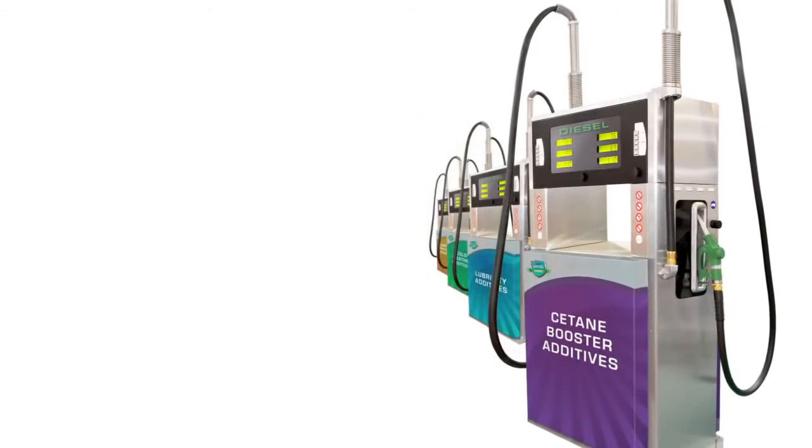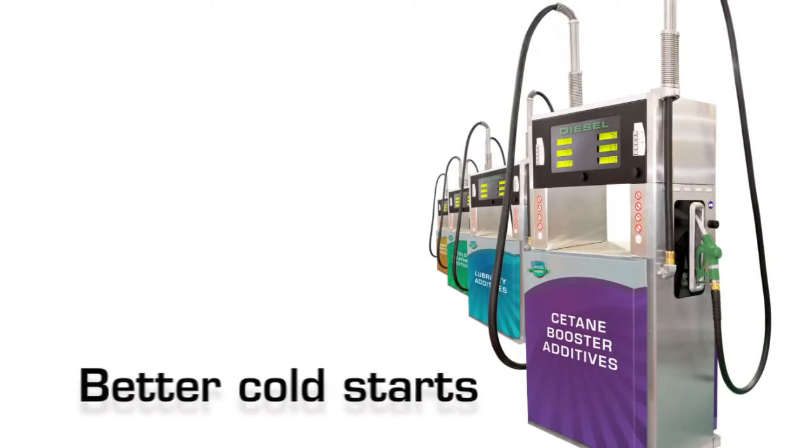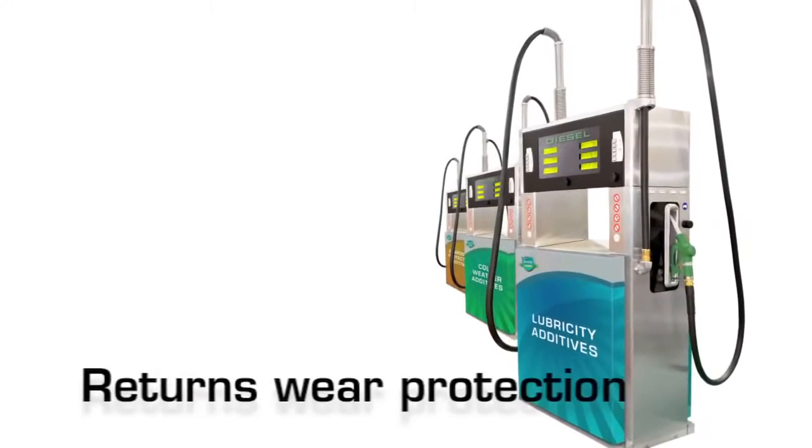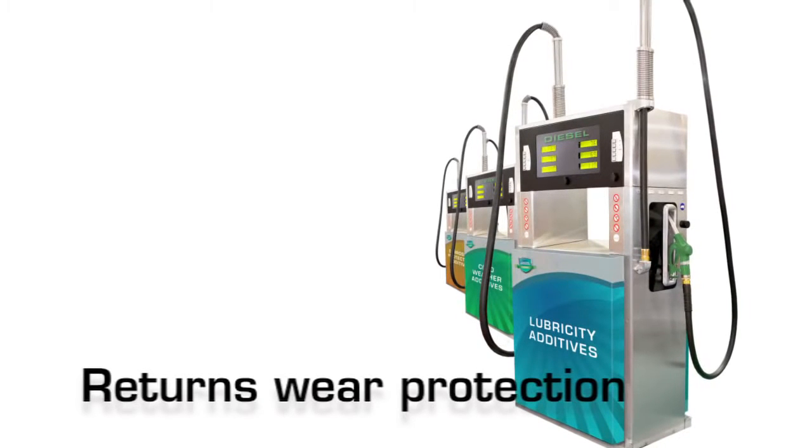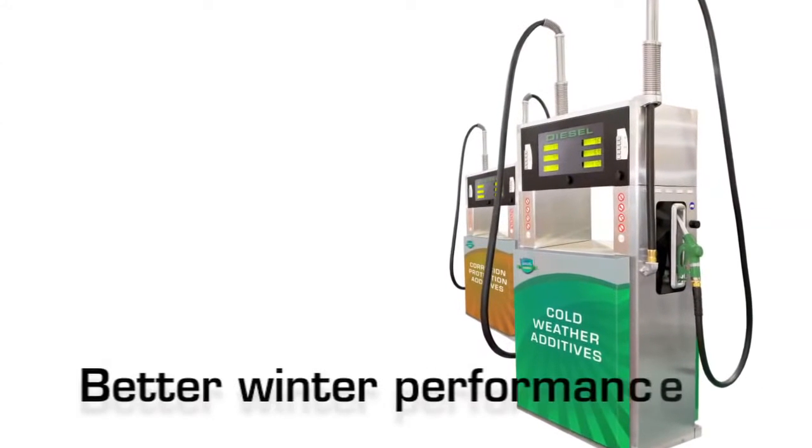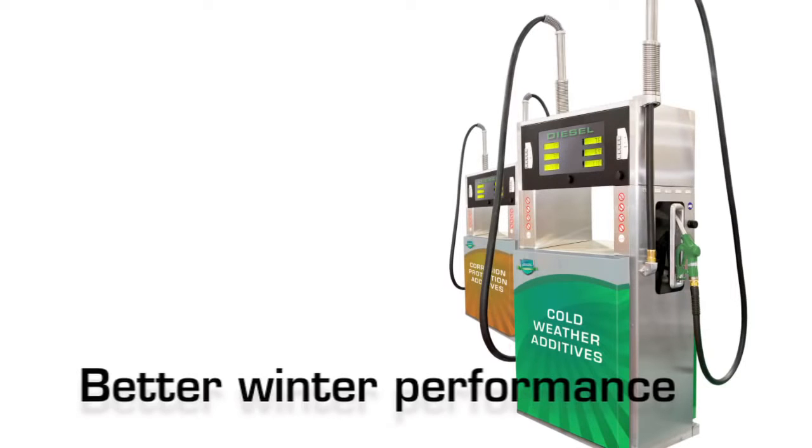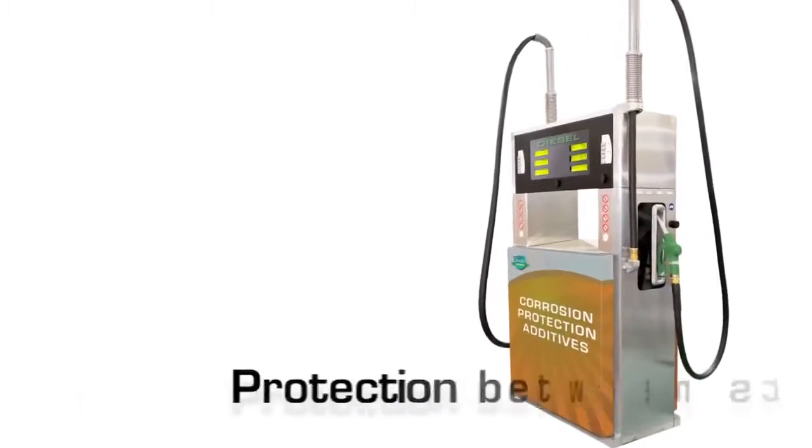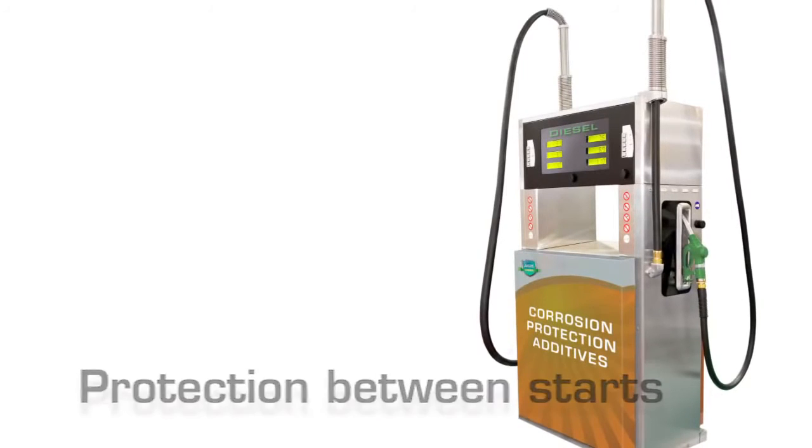Improving cetane properties delivers better cold starts and quieter operation. Enhancing lubricity returns wear protection that was reduced with the transition to ultra-low sulfur diesel. Optimizing winter operability performance lowers the temperature at which diesel gels and becomes unable to flow through fuel filters. Corrosion protection and improved stability can provide engine protection between starts.